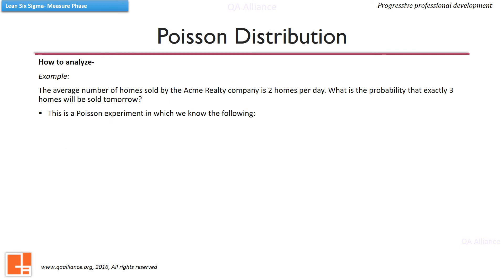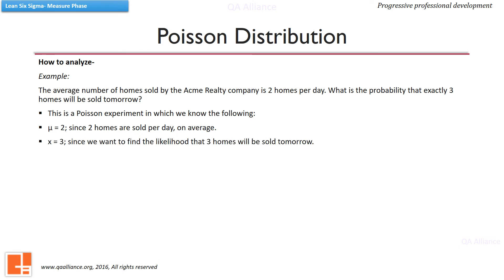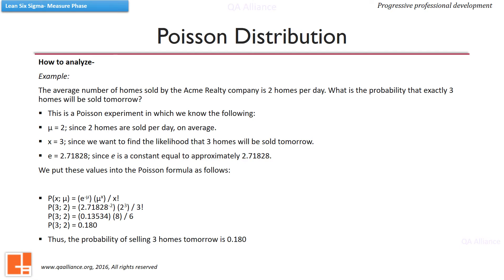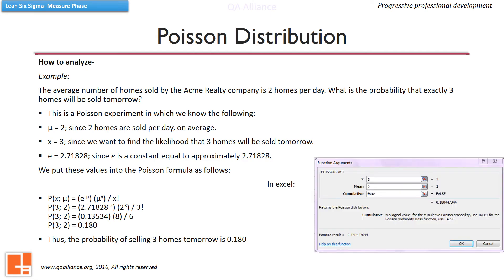Let us take this example: the average number of homes sold by the Acme Realty Company is 2 homes per day. What is the probability that exactly 3 homes will be sold tomorrow? Here, Mu equals 2, X equals 3, this is absolute and not cumulative, and E is the constant 2.71828. Putting all these values into the equation gives an answer of 0.18. So the probability of selling exactly 3 homes is 0.18. In Excel, we can use the POISSON.DIST function with cumulative set to FALSE, which also gives the answer of 0.18.